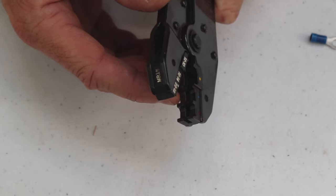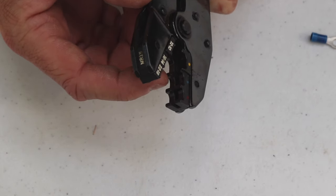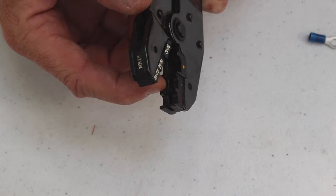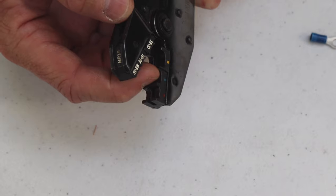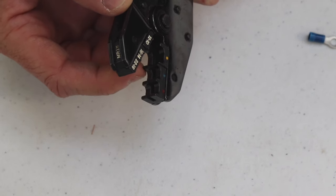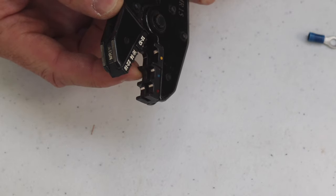You can look inside the crimper and see two notches. They have the same profile so one is going to crimp the metal terminal underneath the insulation and the other one is going to crimp the insulation onto the wire. So one's going to provide the actual electrical crimp and then the other one is going to provide the strain relief.